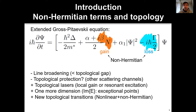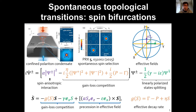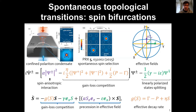The first part, addressing spontaneous topological transitions, is based on the notion of spin bifurcations of trapped condensates. It was discovered in 2015 by Hamida Hadi and co-workers in Cambridge that there exists a possibility of spontaneous and random buildup of spin polarization of the condensate. This effect was interpreted and explained in terms of the spinor version of the extended Gross-Pitaevsky equation, with the spin-anisotropic interaction term, gain-loss competition, and linearly polarized non-Hermitian state splitting due to the symmetry of the crystal.